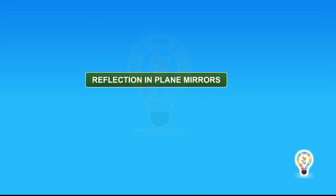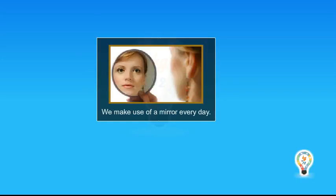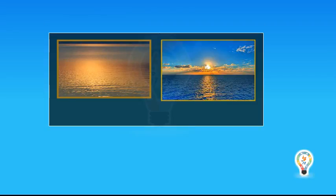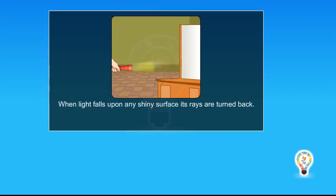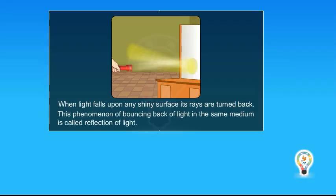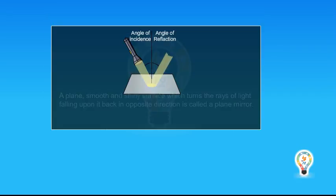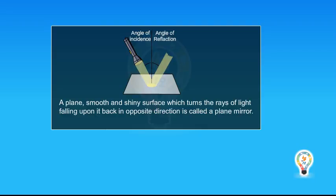Reflection in Plane Mirrors. We make use of a mirror every day. You have seen reflection of images in a mirror, in still water, or any smooth and shiny surface. When light falls upon any shiny surface, its rays are turned back. This phenomenon of bouncing back of light in the same medium is called the reflection of light. A plain, smooth and shiny surface which turns the rays of light falling upon it back in the opposite direction is called a plane mirror.